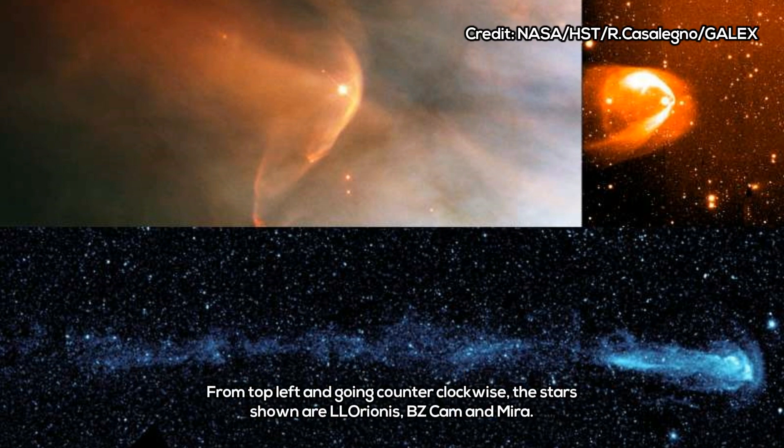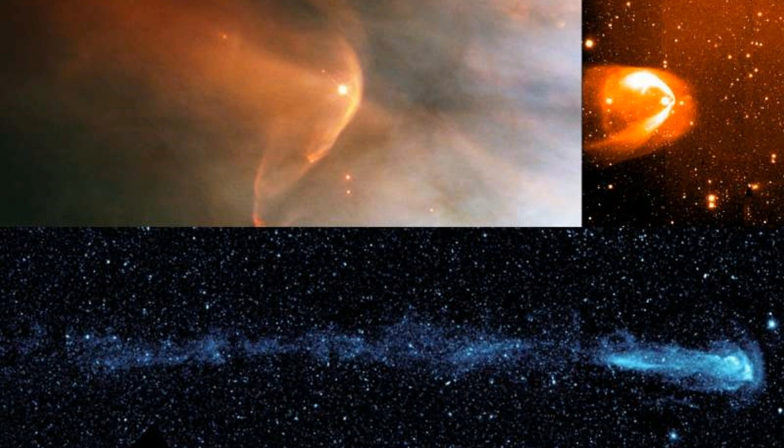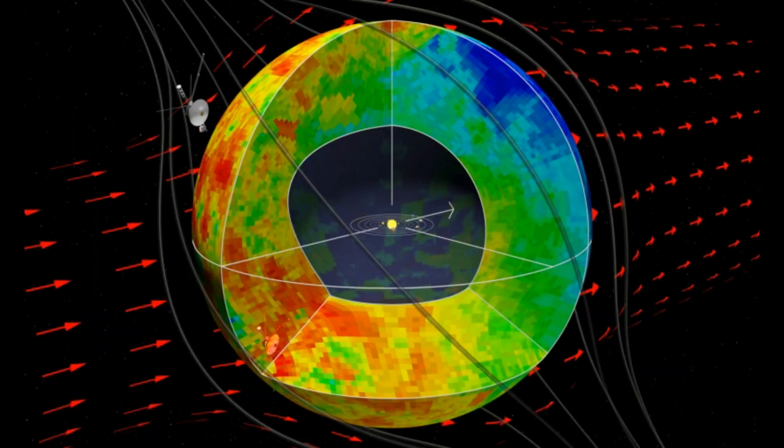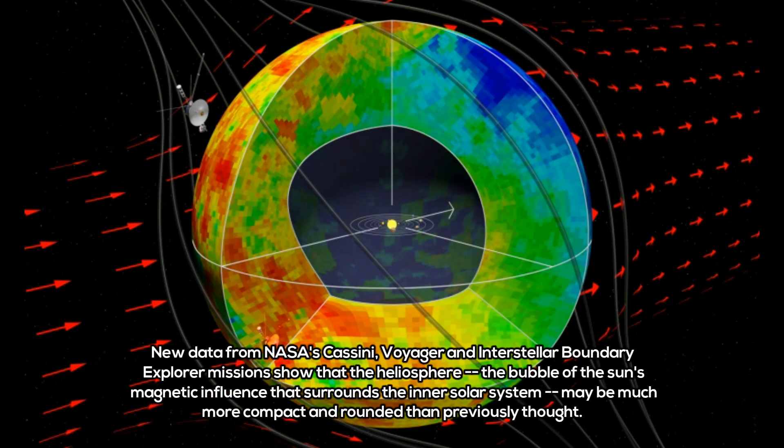When charged particles from the inner solar system reach the boundary of the heliosphere, they sometimes undergo a series of charge exchanges with neutral gas atoms from the interstellar medium, dropping and regaining electrons as they travel through this vast boundary region.